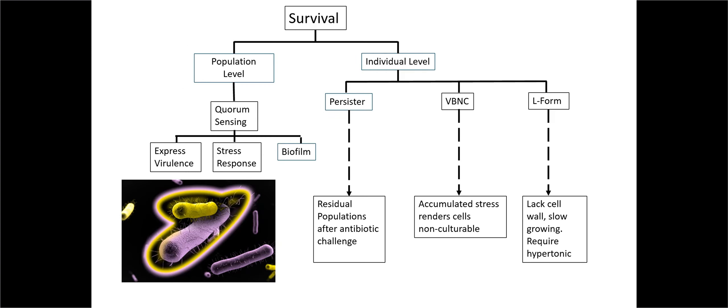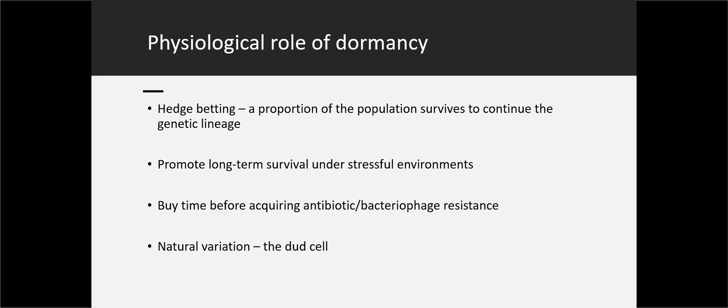When we look at survival, we can look at the population level - forming biofilms, the stress response, maybe that's the time to invade. But on an individual level, what we have are these different forms of what I call dormancy. The L-forms - these cell wall-less bacteria that grow slowly, very tolerant to thermal stress. Then the VBNC, which is differentiated from persisters - bacteria that are just beaten up so much they can't grow anymore, but they're still viable. And then the persisters - these are the populations that resist antibiotic challenge.